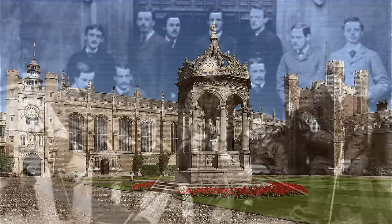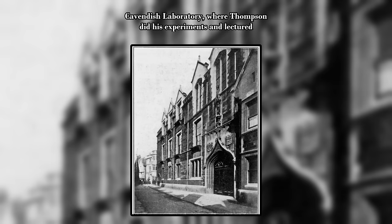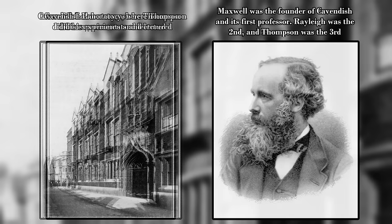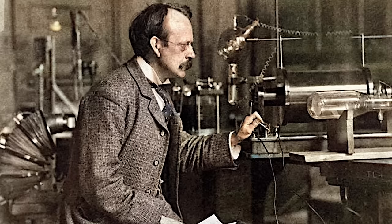Once at Trinity, he stayed there for the rest of his life, receiving his bachelor's degree in mathematics in 1880. From that point, he would spend his time providing lectures and conducting research on electromagnetism, following in the footsteps of James Clerk Maxwell. In 1895, he turned his attention towards a hot topic at the time: cathode rays.